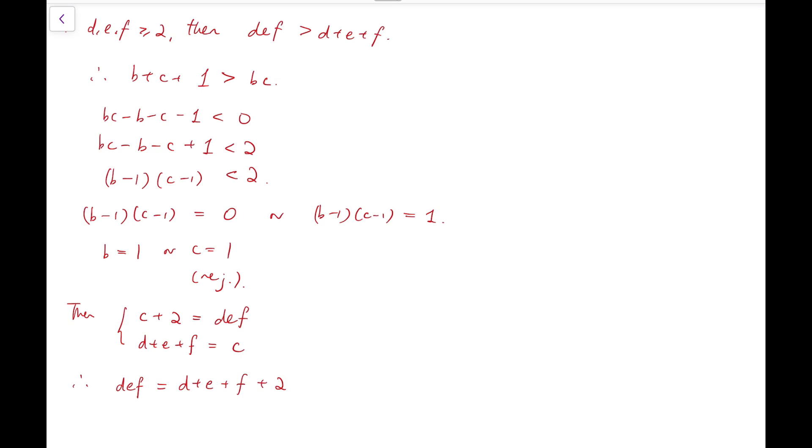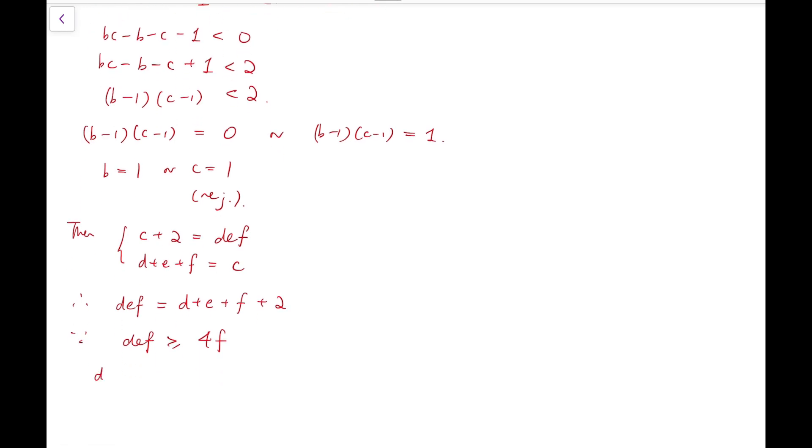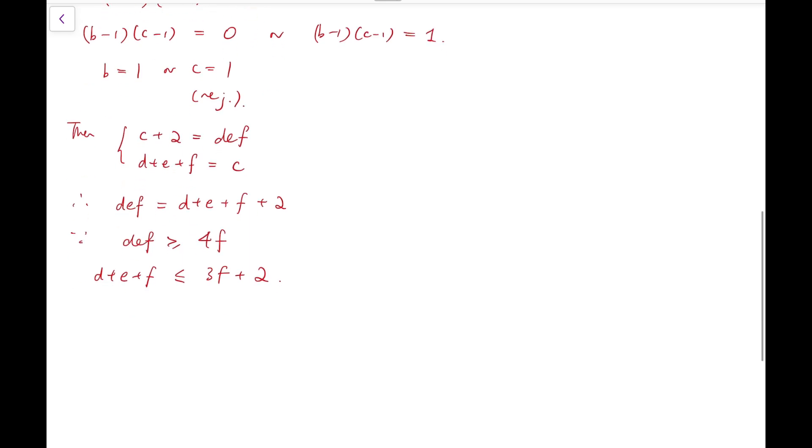However, def is actually at least 4f. And on the other hand, d plus e plus f is at most 3f plus two. I mean d plus e plus f plus two, the right-hand side, the entire right-hand side is at most 3f plus two. So therefore, 4f is less than or equal to 3f plus two. So therefore, f is less than or equal to two.